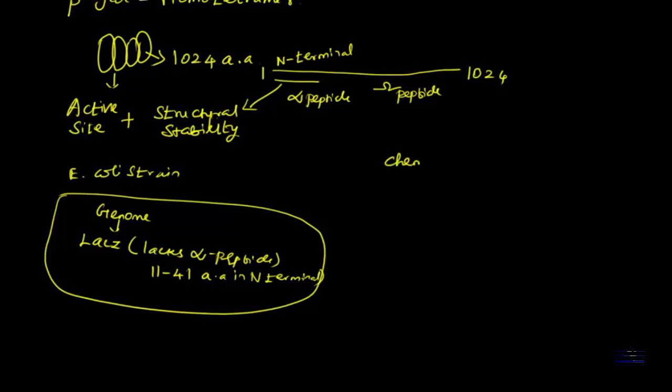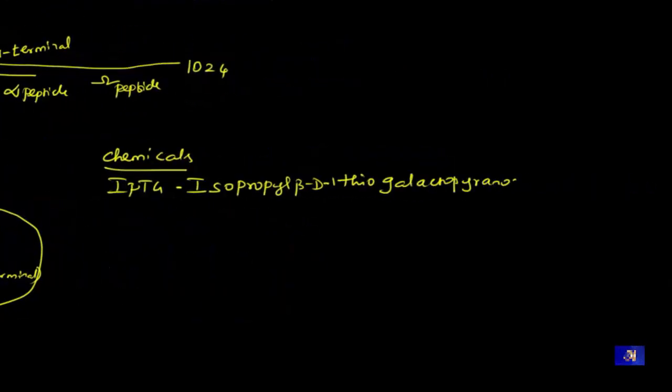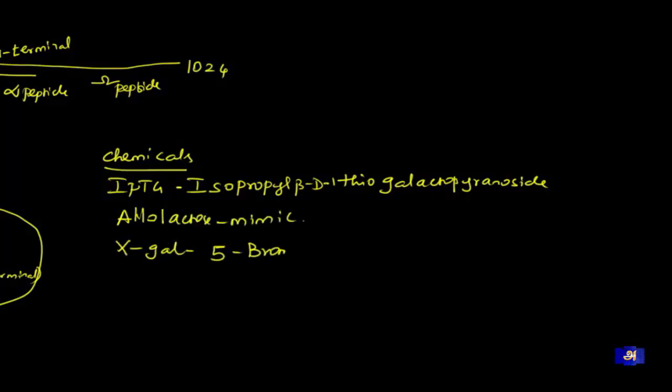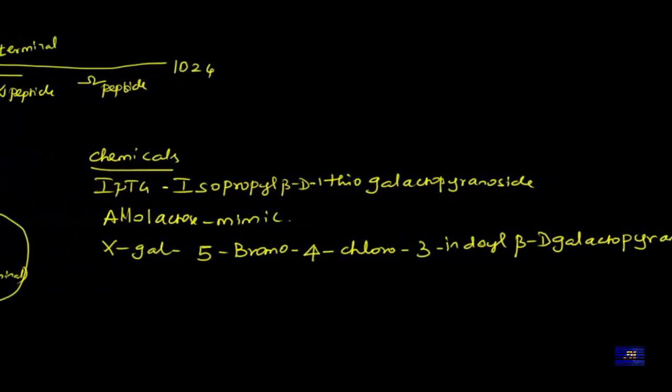IPTG, if I expand it, may scare you - it's isopropyl beta-D-thiogalactopyranoside. So don't fear, it's nothing but allolactose. Another chemical is X-gal, which is 5-bromo-4-chloro-3-indolyl. So what is this X-gal? This X-gal is nothing but an analog of lactose.